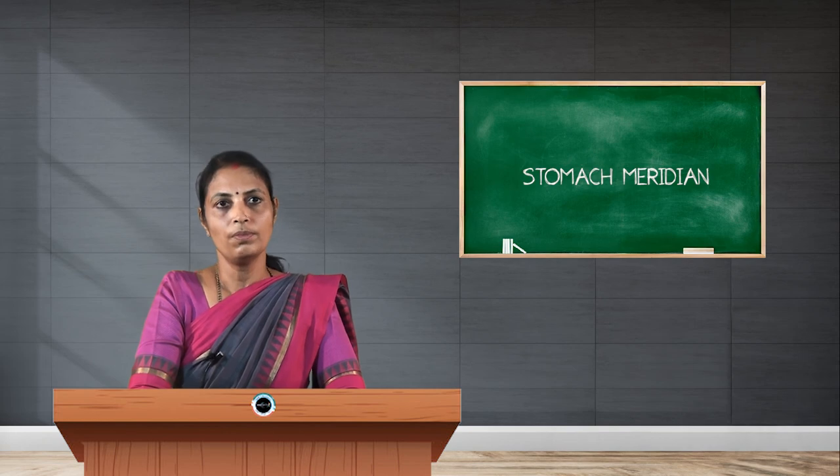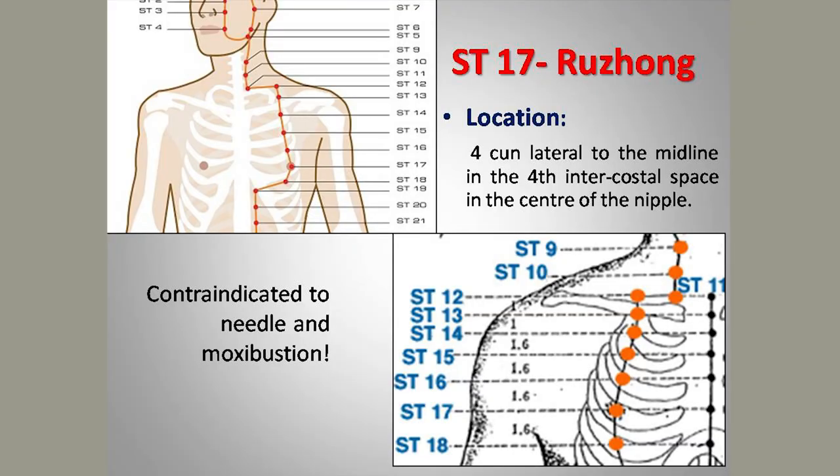Stomach 17, Ruzhong, is one of the important forbidden points. Forbidden points are used only as landmarks and are not to be needled. Pricking this point can injure the specific mammary plexus. Its location is 4 cun lateral to the midline at the fourth intercostal space.